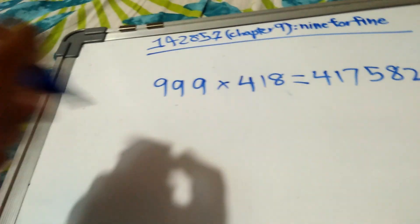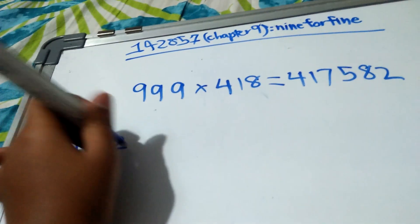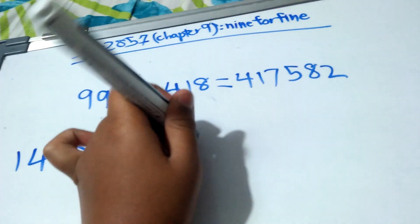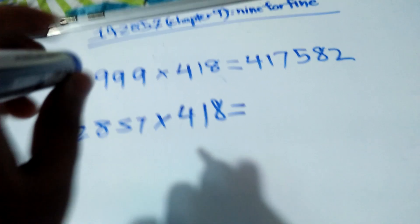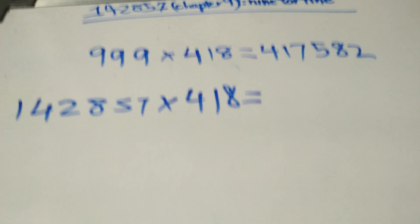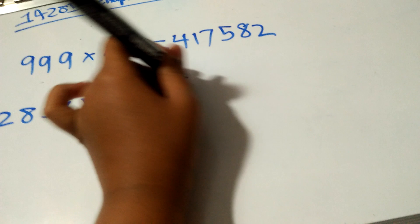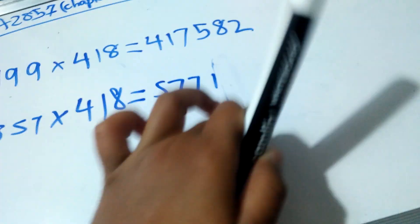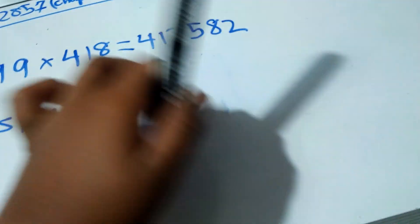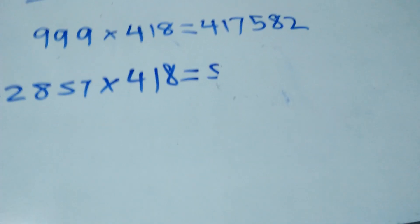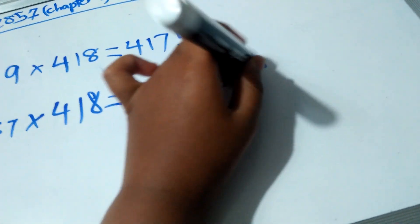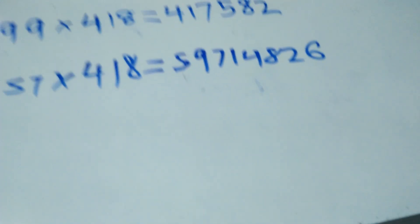We cannot add three nines in the middle of 142857. By the same number, the result you get... okay, the correct number is 5, 9, 7, 1, 4, 8, 2, 6 — that is the correct cyclic arrangement.